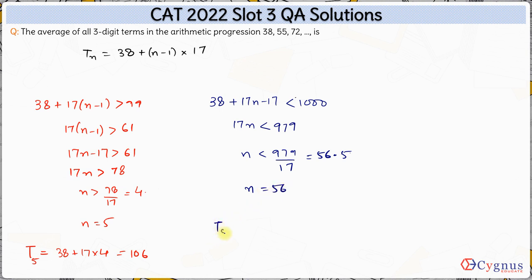So the 56th term will be 38 plus 17 into 56 minus 1, which is 55, and once you solve this, this comes out to be 990.